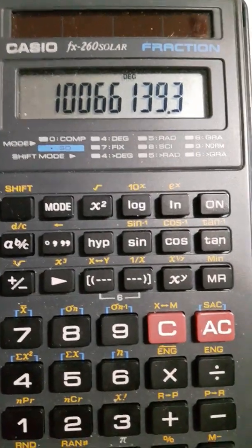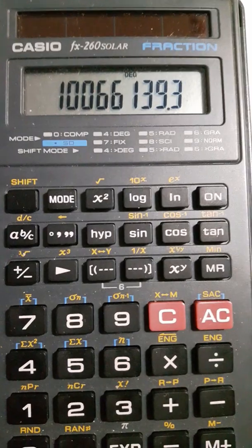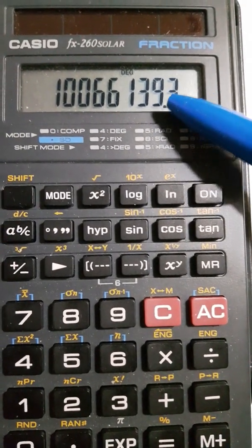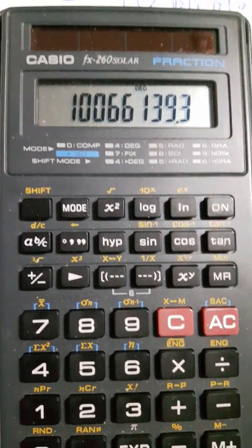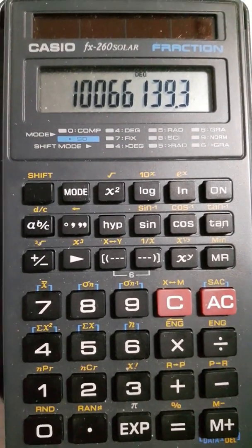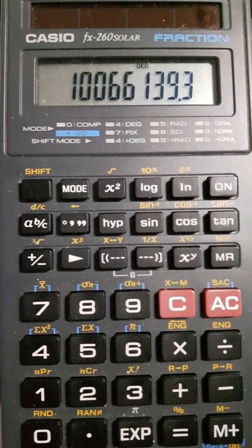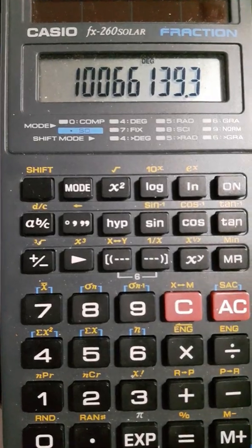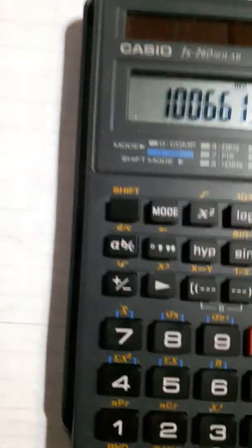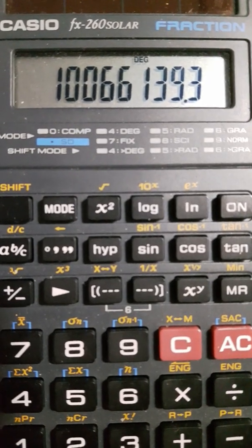Now to get megahertz, we go six places to the left with the decimal point. Count over 1, 2, 3, 4, 5, 6. So 10.066, which is rounded up to 10.1. And lo and behold, the answer is 10.1. So 10.1 megahertz.